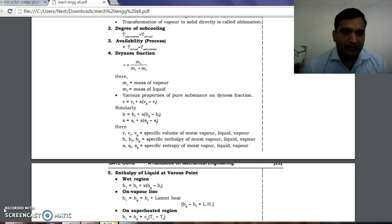Dryness fraction is given by x, where x equals m_v divided by (m_v plus m_l), where m_v is mass of vapor and m_l is mass of liquid. So, mass of vapor upon total mass of steam.